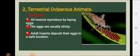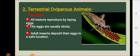Now let us learn about terrestrial oviparous animals — insects. All insects reproduce by laying eggs. Insect eggs are deposited by an adult insect in a safe location, such as leaves, dirt, water, or even the bodies of humans and other animals. The eggs are usually sticky so they can hang onto the surface without falling off.